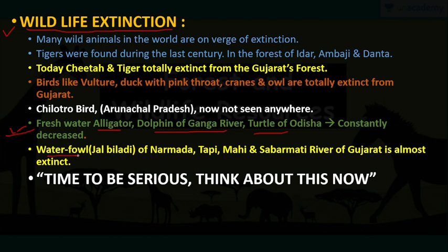We also have a waterfall fish called Joel Biladi of Narmada, Taapi, Mahi and Sabarmati rivers of Gujarat that is almost extinct. We have to be serious now, because if we do not act, in the near future we will not have this variety of birds and animals in our Gujarat forest.